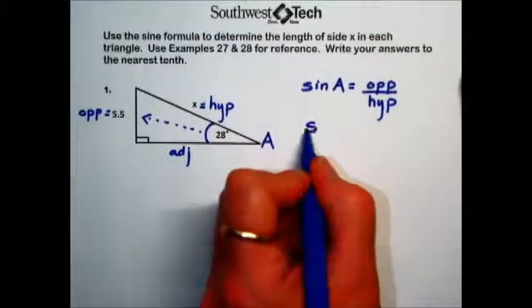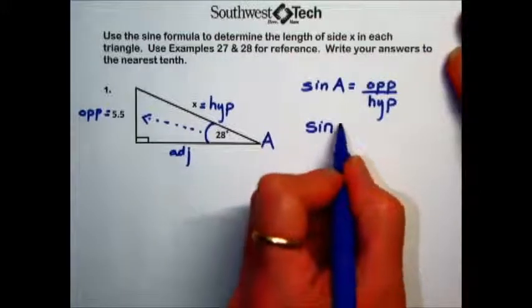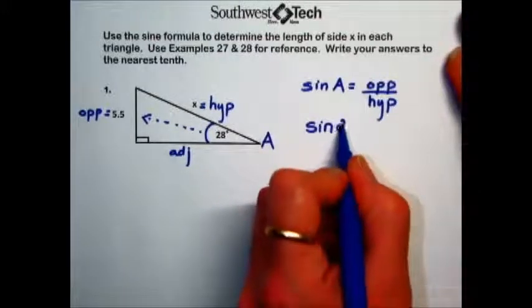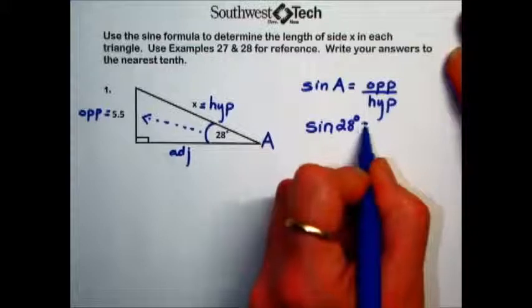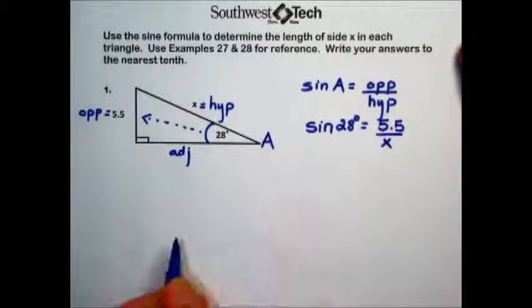We'll plug in the particular or relevant values that we have. We know our reference angle measurement, 28 degrees. The opposite side has a length of 5.5 and the hypotenuse is what we're looking for.